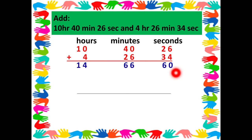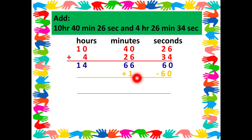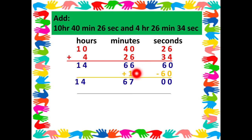Now looking at the seconds, we get exactly 60 — which is equal to 60. So we subtract 60 seconds from the seconds and add 1 to the minutes. After subtracting 60 from 60 seconds we get 0 seconds. Then 66 minutes plus 1 minute makes 67 minutes, and 14 hours we write as such.